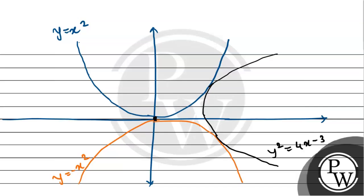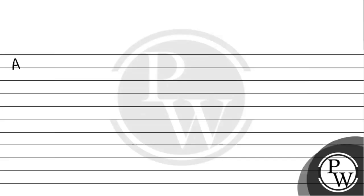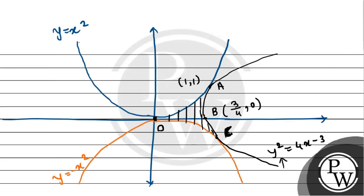For the intersection points on the graph, we label them: O at (0, 0), A at (1, 1), and B and C for the other boundary points. The y = 0 axis gives x = 3/4 for the third curve. The required region is enclosed by the curves in the area O-A-B-C-O. To calculate this region, we subtract the area under the upper parabola y = x² and the lower parabola y = -x² from the region under the third curve.